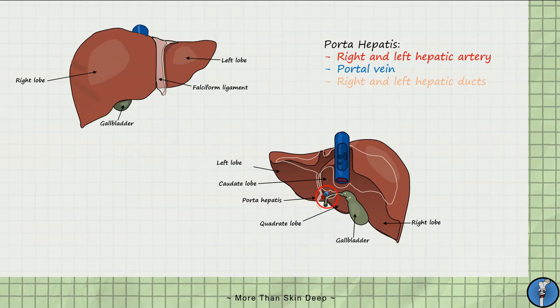The gallbladder which stores and concentrates bile is more prominent on the posterior aspect of the liver. Through the cystic duct, the gallbladder communicates with the common hepatic duct to form the common bile duct.